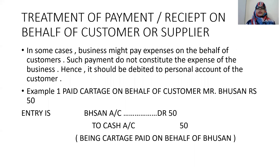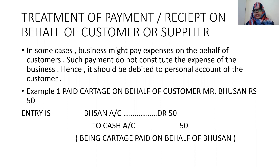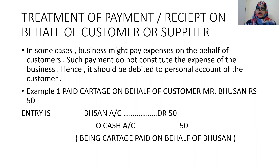Moving forward: treatment of payment or receipts on behalf of the customer or supplier. Customers are the persons who buy from us, and suppliers are the persons from whom we get goods — the person who sells us goods is the supplier, the person to whom we sell are our customers. What is the basic accounting treatment we have to perform in the books of accounts?